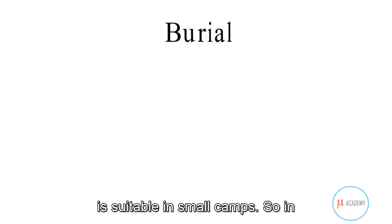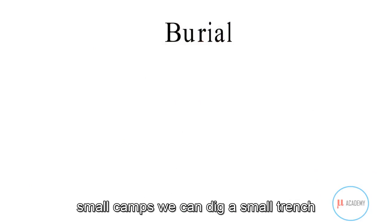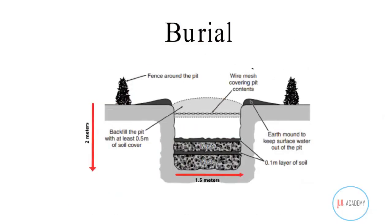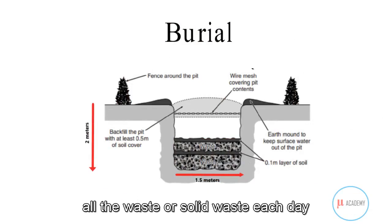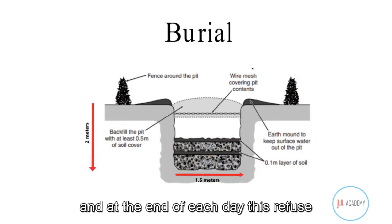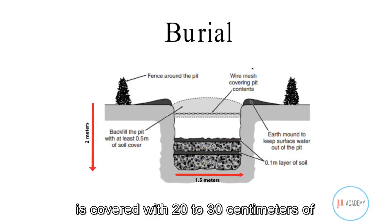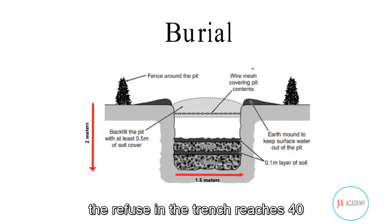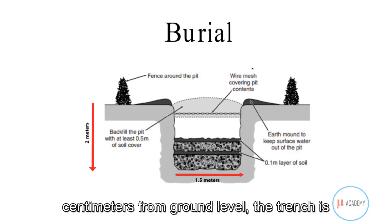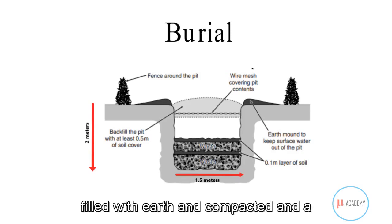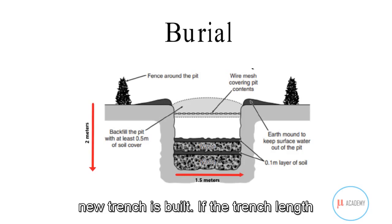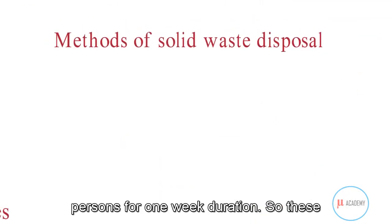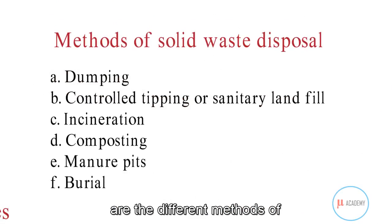The final method of solid waste disposal is burial, suitable for small camps. A trench of 1.5 meters wide and 2 meters deep is dug, and solid waste is deposited daily. At the end of each day, the refuse is covered with 20 to 30 centimeters of earth. When the refuse level reaches 40 centimeters from ground level, the trench is filled and compacted, and a new trench is started. A one-meter-long trench can serve 200 persons for one week.